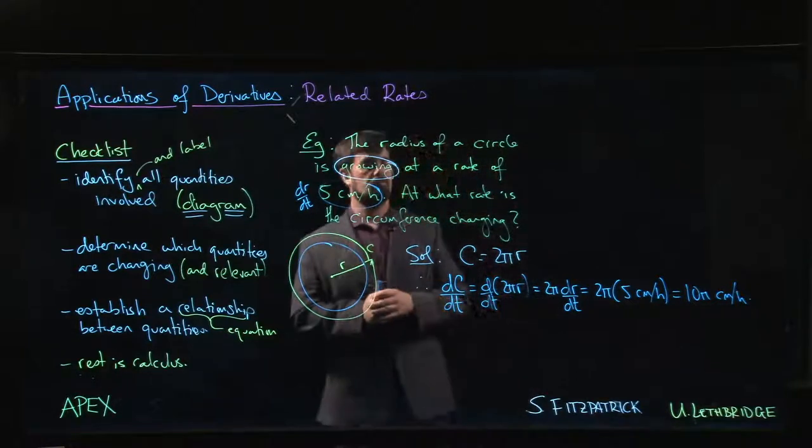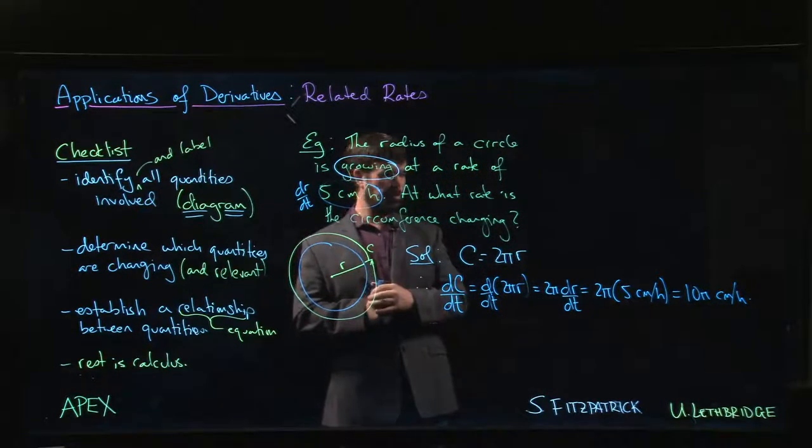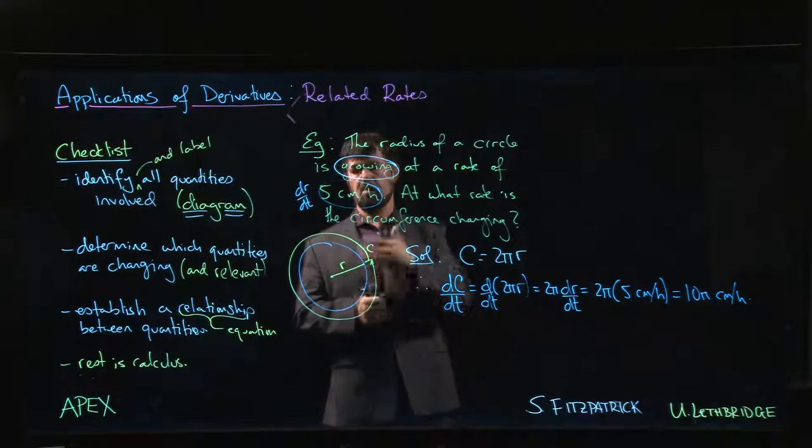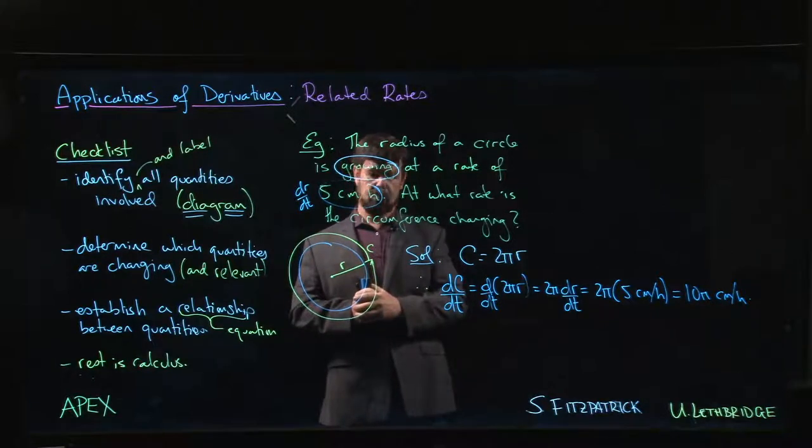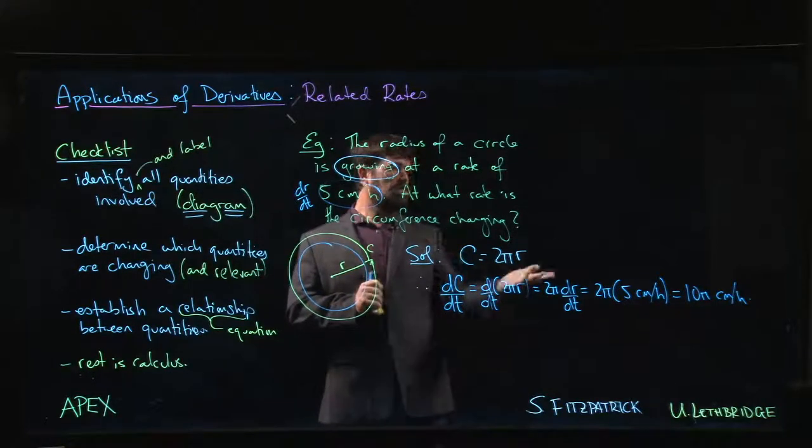So we started with this problem where we found the relationship between circumference and radius and we knew the rate at which the radius was increasing, and that let us determine the rate at which the circumference was increasing.